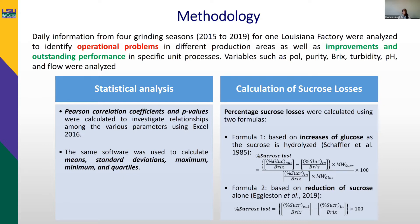We analyzed different variables such as pole purity, brix, flow rates, among others, and we used statistical analysis including Pearson correlation coefficients, p-values, means, standard deviation, maximum and minimum values. We also estimated sucrose losses across the factory in specific areas using two formulas: one based on the increase of glucose and the other based on reduction of sucrose.